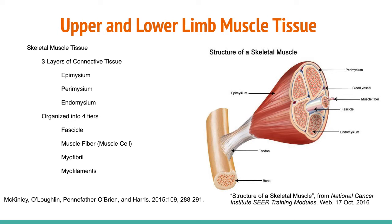There are three layers of connective tissue that surround components of the muscle cell, the muscle itself, and attach the muscle to the bone. Epimysium is the most superficial layer that surrounds the entire skeletal muscle. Perimysium is deep to the epimysium and surrounds the fascicles of the muscle fiber. Endomysium is the deepest layer of connective tissue and surrounds each individual muscle fiber.